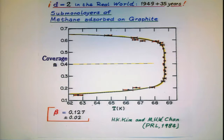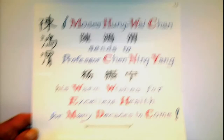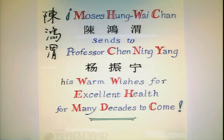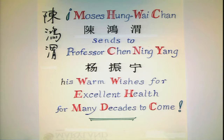So it took a long time before one could actually do the experiment that had been forecast. I know Moses Chan very well — he was a graduate student at Cornell. Of course Moses is his adopted name when he came to the United States. And I am happy to say that recently he has been revealing his Chinese name, as Hung Wai. And he especially wanted to send to Frank Yang his warm wishes for an excellent health for many decades to come. And here, for those of you who haven't seen it, is Yang's name in full.